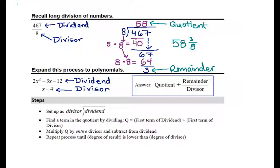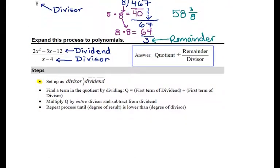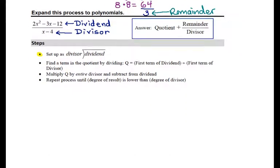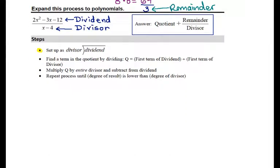The first step is to set this up in a division bracket. So, let's go ahead and write that out, what that would look like with the divisor on the outside and the dividend on the inside. The divisor is x minus 4.